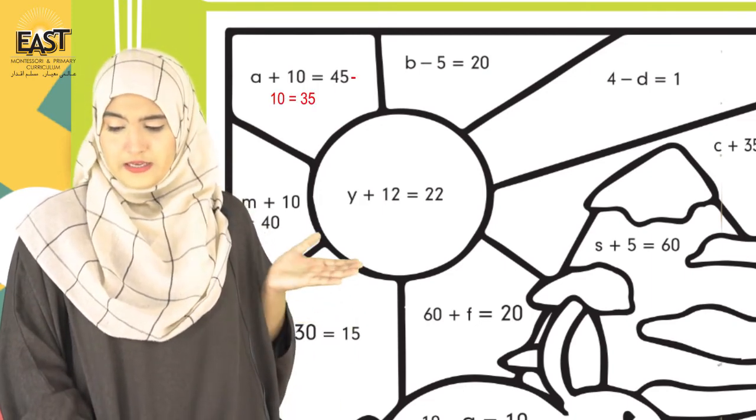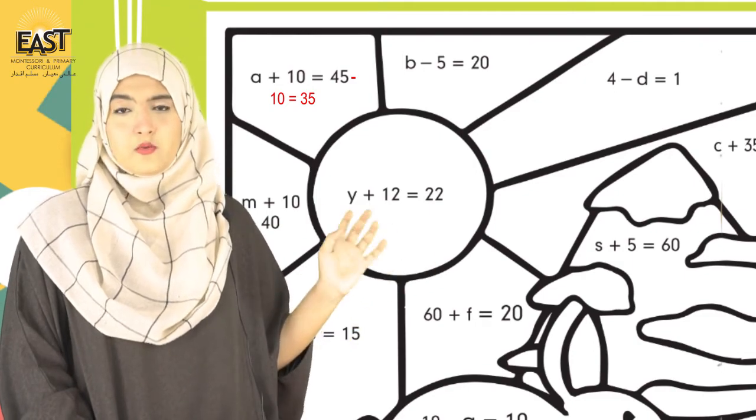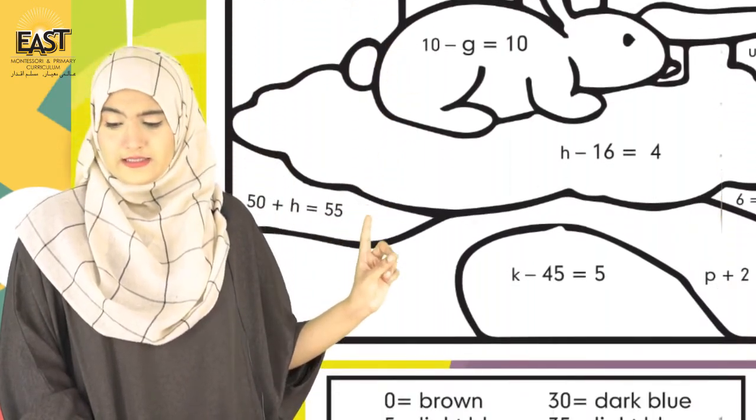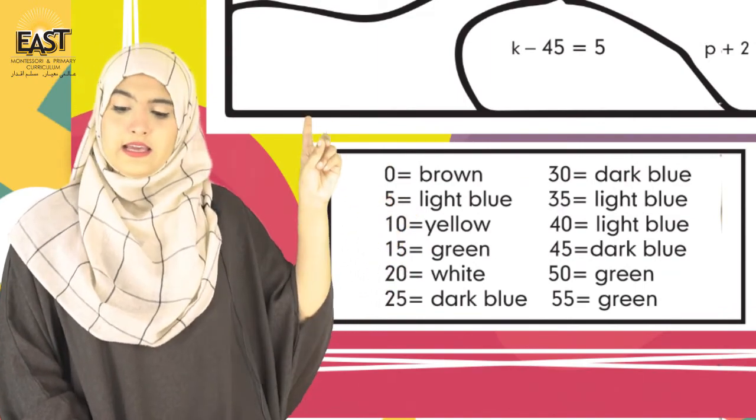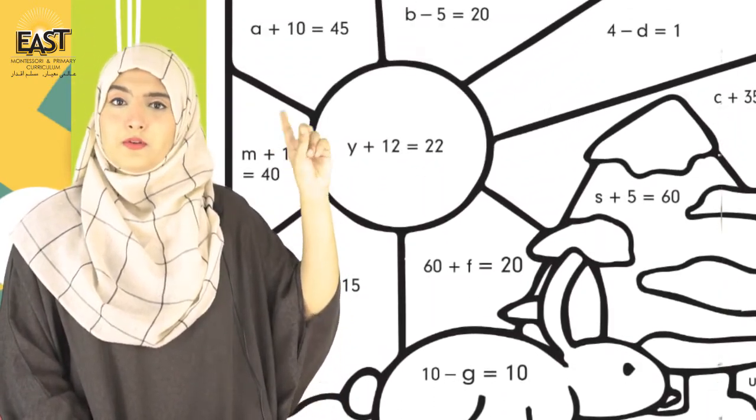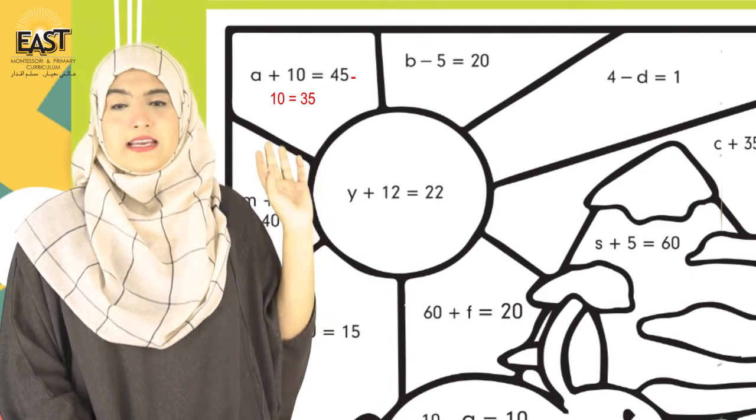Jhundi yeh zara is chart mein, joh table banha hua hai. Yaha pe 35 ke dher likha hai - 35 likha hai light blue color ke sath. Aapnei kiya karna hai - is fali section me blue color karna hai.